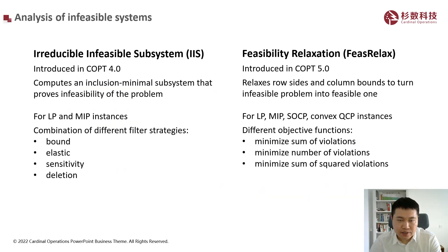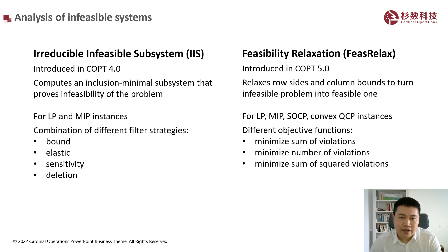Besides all the mathematical solvers, Copt also provides two very important functionalities for resolving infeasible problems. They are called IIS and FeasRelax. IIS can help you compute a smaller subsystem which is also infeasible, and that can help you debug the model more easily. FeasRelax can relax an infeasible problem to become feasible, and meanwhile it can tell you which variables and constraints need to be relaxed.